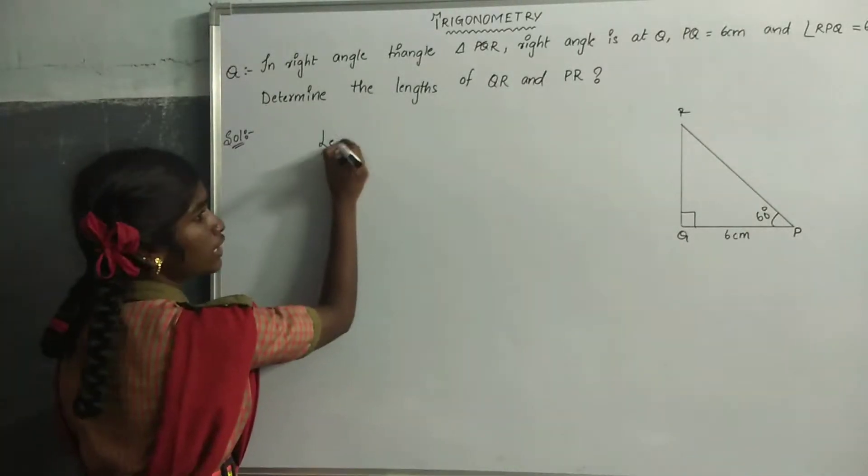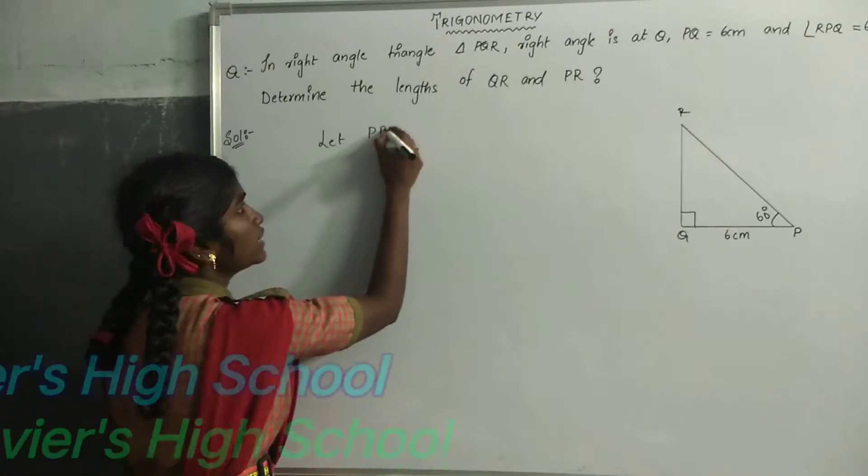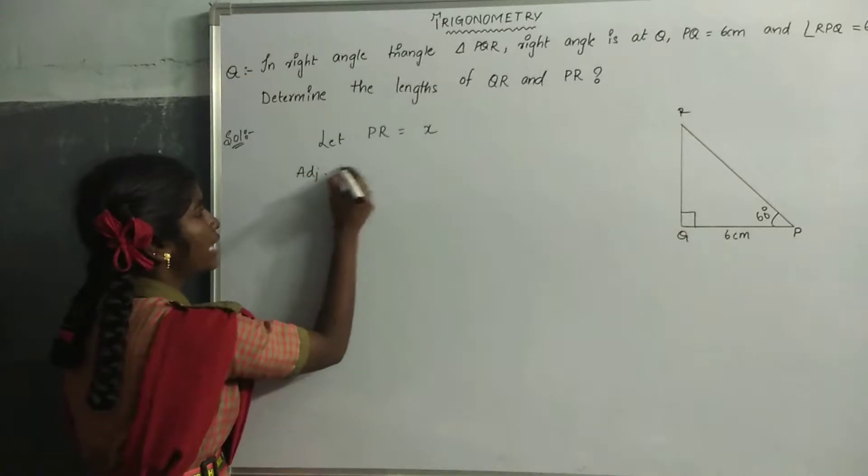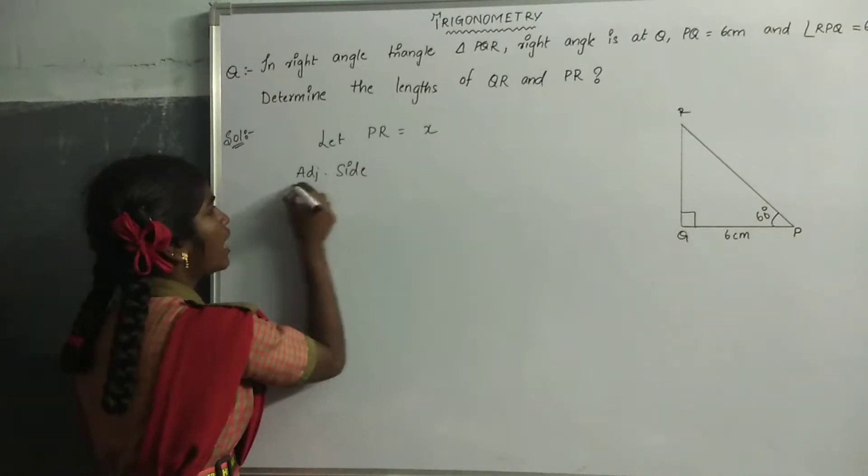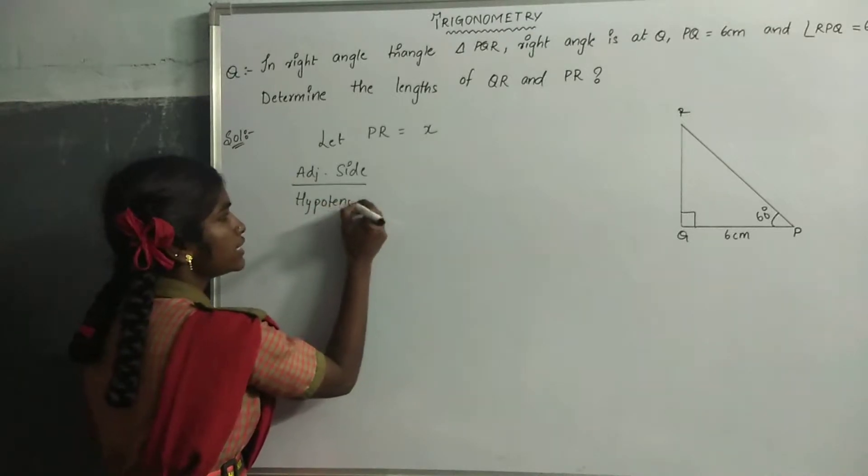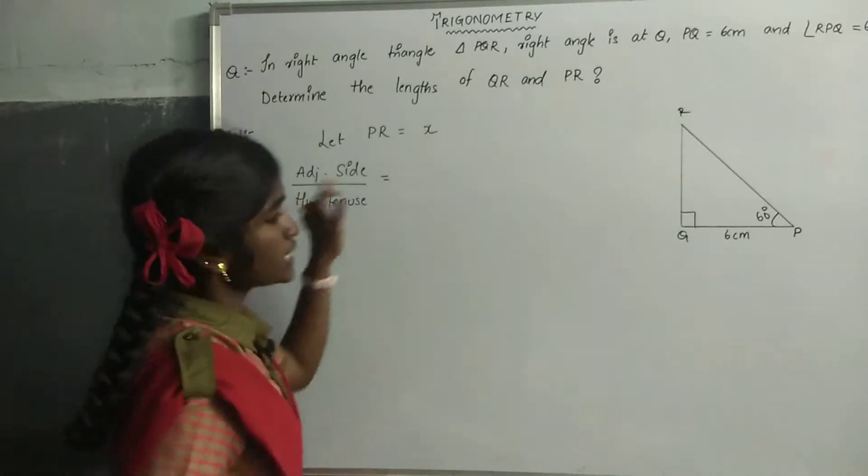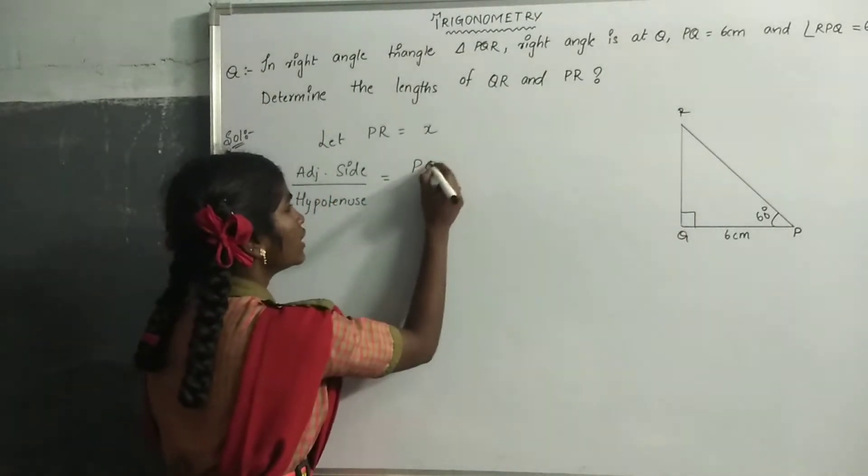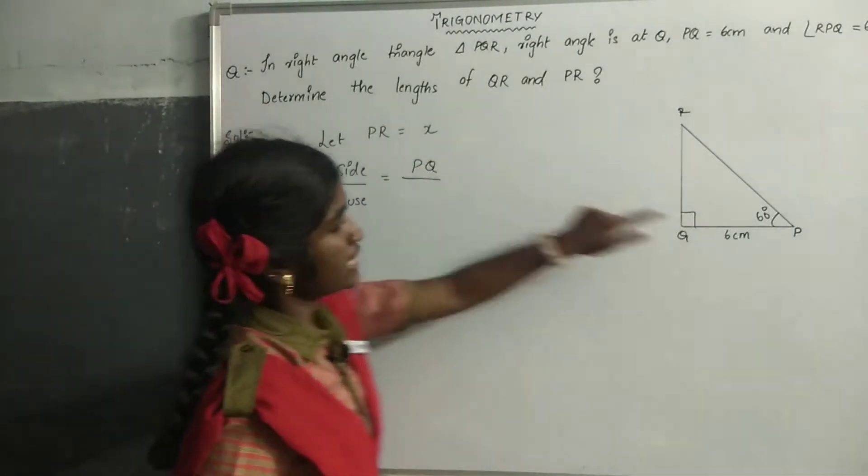Let PR equals X. Adjacent side by hypotenuse equals - adjacent side to 60 degrees is PQ, hypotenuse is PR.